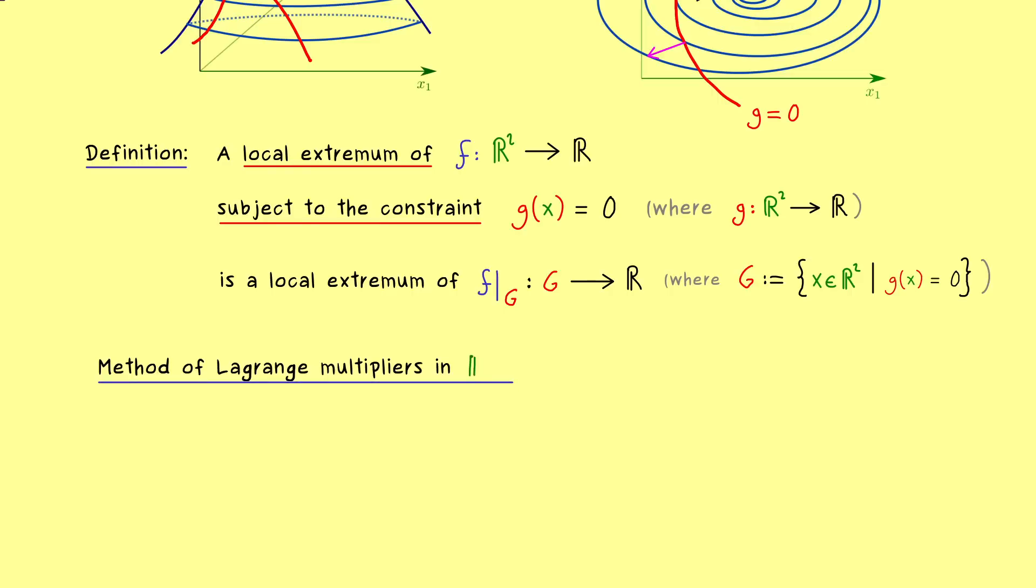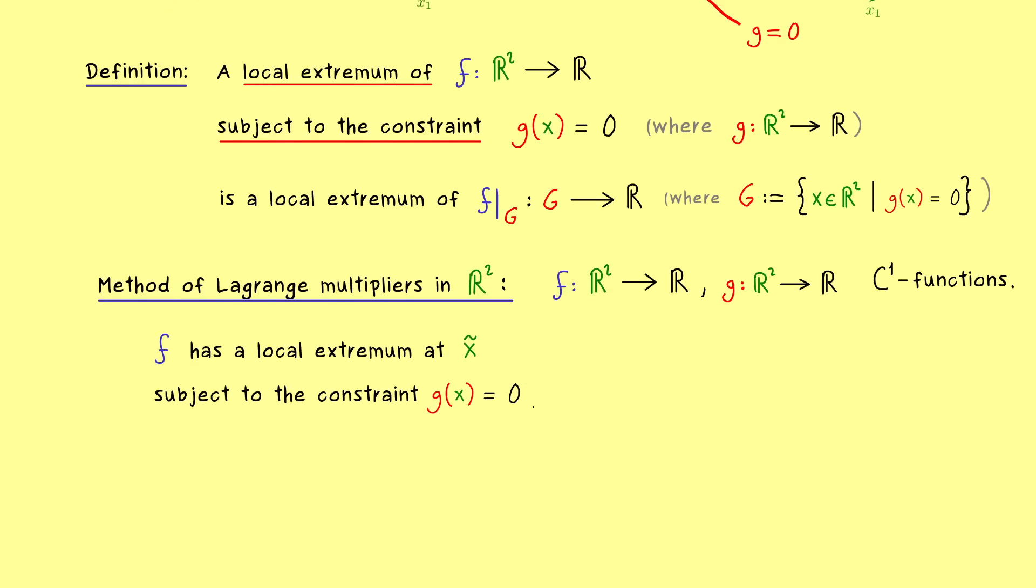And at this point, we only have the special version in R². But this one we can already write down and prove. And the overall assumption we need here is that we have two C¹ functions f and g. So we are interested in the values of the function f, but g gives us the constraint. And now we are able to formulate the necessary condition for f having a local extremum subject to the constraint. So as before, we will formulate that with an implication. And the point where we find the local extremum, we will call x tilde again. However, here please don't forget that x tilde has to lie on the constraint. So we have that g of x tilde is zero as well. Ok, so now this means that we have a local extremum under the constraint at the point x tilde.